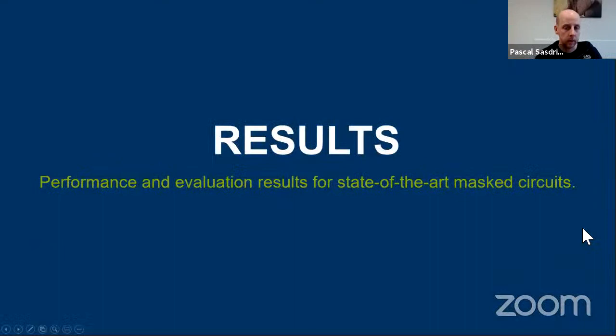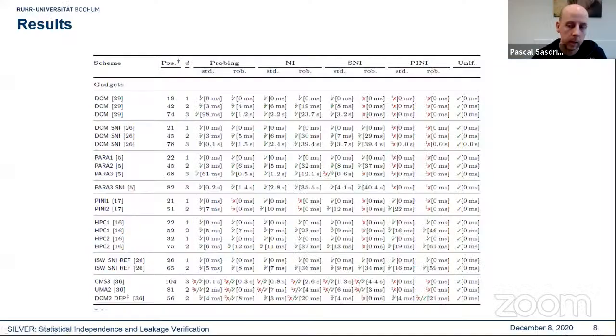In order to evaluate the performance and the efficiency of our tool, we performed an extensive set of tests of different mask gadgets, as well as full S-boxes and other Boolean functions that we found in the literature. So here you can see the results for different mask gadgets that we analyzed, and most interestingly, our tool also could confirm the manually found flaws in several schemes, such as the CMS3 or the UMA2 that you can see in the last lines here. Besides single mask gadgets, we also analyzed several mask S-boxes and Boolean functions for their security properties, as you can see in the table on this slide.